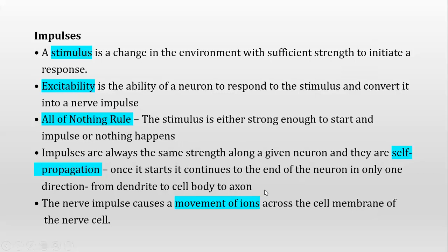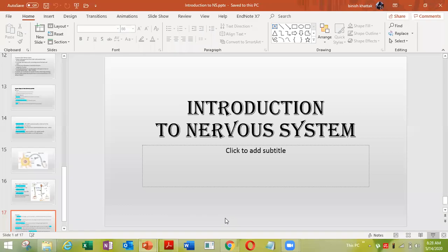Impulses have self-propagation: once started, they continue to the end of the neuron. The nerve impulse causes movement of ions across the cell membrane. Because of the movement of ions, action potential is generated across the cell membrane of the nerve cell. This concludes the introduction to the nervous system.